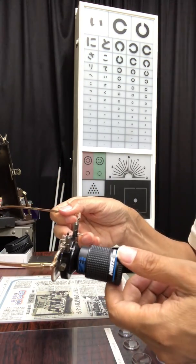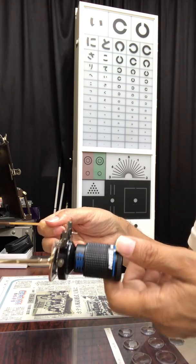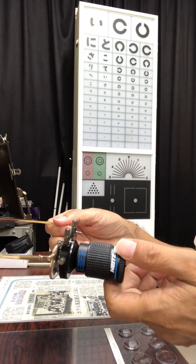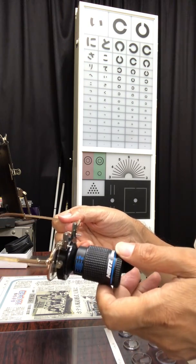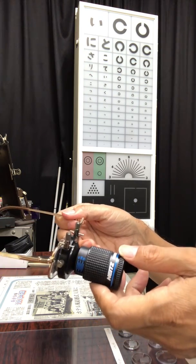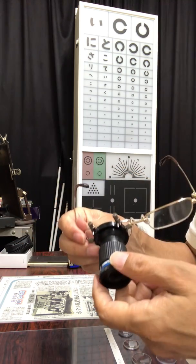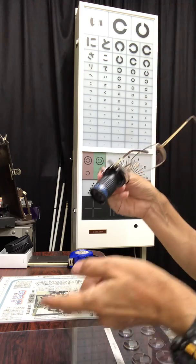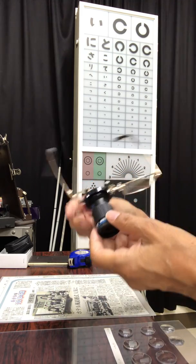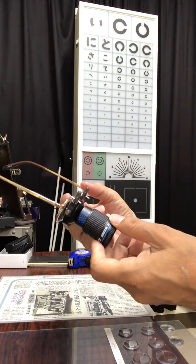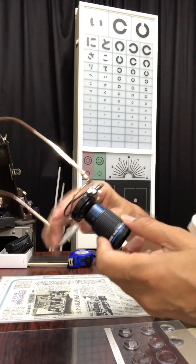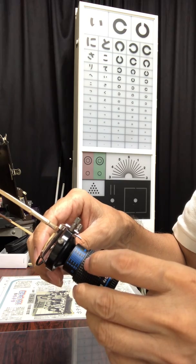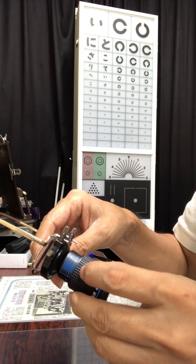This is a telemicroscope eyeglass for low vision people to enlarge the letters of newspapers which has long working distances. Now, I want to choose 16 diopters and a working distance of 13 centimeters.